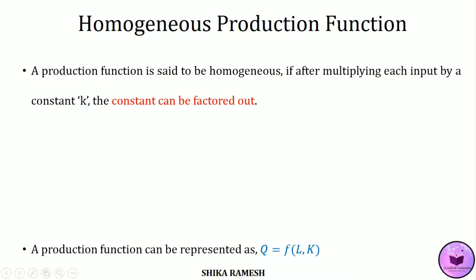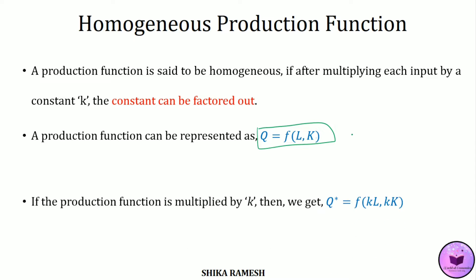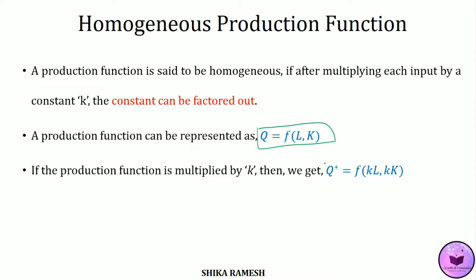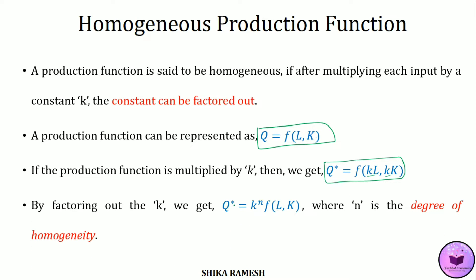For example, a production function Q is equal to the function of labour and capital. If we multiply this production function with a constant k, we get Q* equal to the function of kL and kK. Factoring out the constant k, we get Q* equal to k raised to n, times the function of labour and capital, where n is the degree of homogeneity.